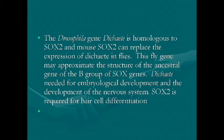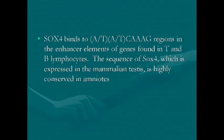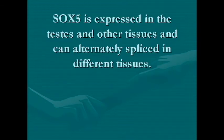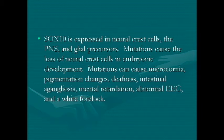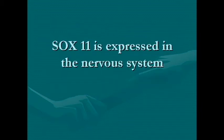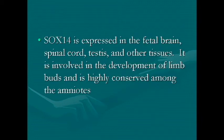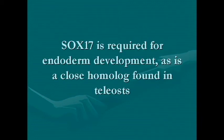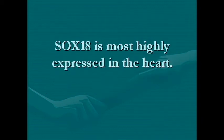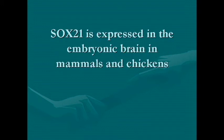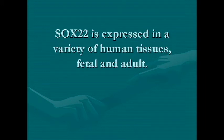Not only have genes been conserved between invertebrates and vertebrates, but also gene expression patterns. For example, in both vertebrates and Drosophila, group B and group D SOX genes are expressed in the nervous system, group B1 genes are expressed in the eye, and group C genes are expressed throughout the embryo.